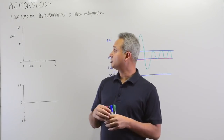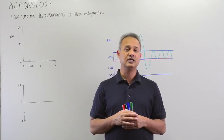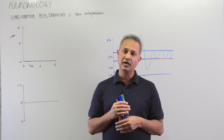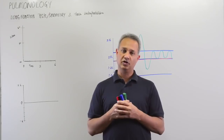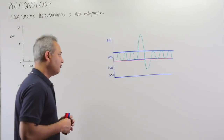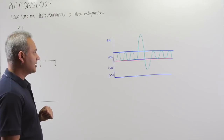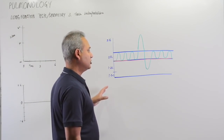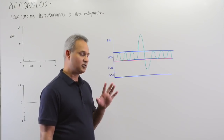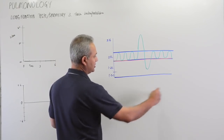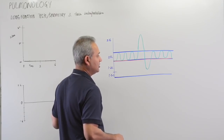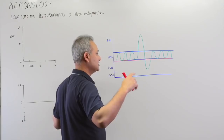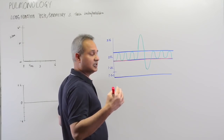This is Mubeen, and we are talking about pulmonology. The topic is lung function tests or spirometry and the interpretation of it. Let's start by looking at this diagram — what we have here are the normal volume changes and capacities in the lungs.